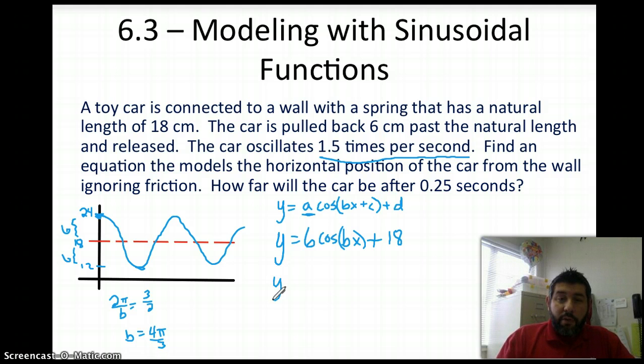All right. So I'm going to put that in here. And I'm going to get y equals 6 cosine 4π over 3 x, or t if you want to use t, plus 18. And there is my mathematical model.